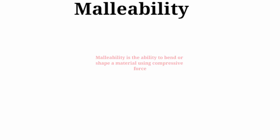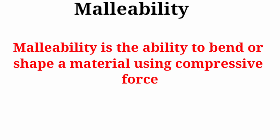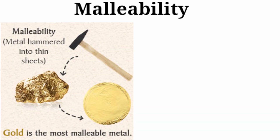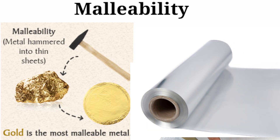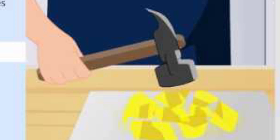Malleability is the ability to bend or shape a material using compressive force. Metals are malleable, meaning metals when hammered can be converted into thin sheets. For example, aluminium foil used for packing food is made by this process. But non-metals are brittle — if you beat or compress them, they break into pieces.